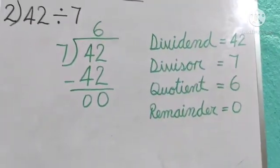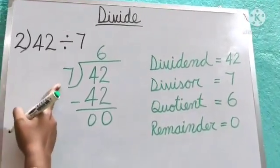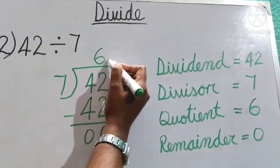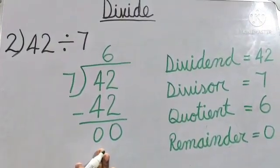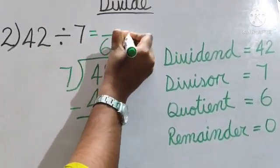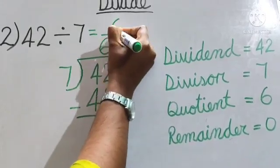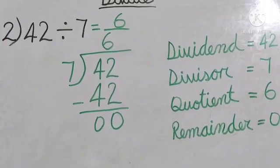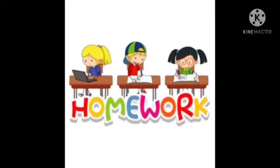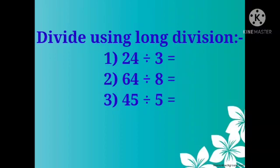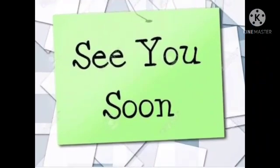So children, like this we solve long division. The divisor goes here, the dividend goes in between, we read the multiplication table to find how many times we get that digit, write it as the quotient, do the subtraction to get the remainder, and write all the parts. You can also write what you get after division: 6 times 7 gives 42. Now note down your homework — divide using long division, write all the questions and solve them. That's all for today's class. See you soon. Bye-bye children.